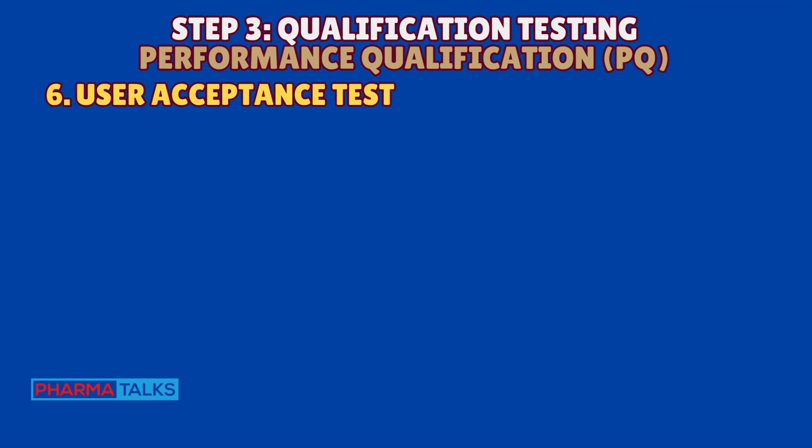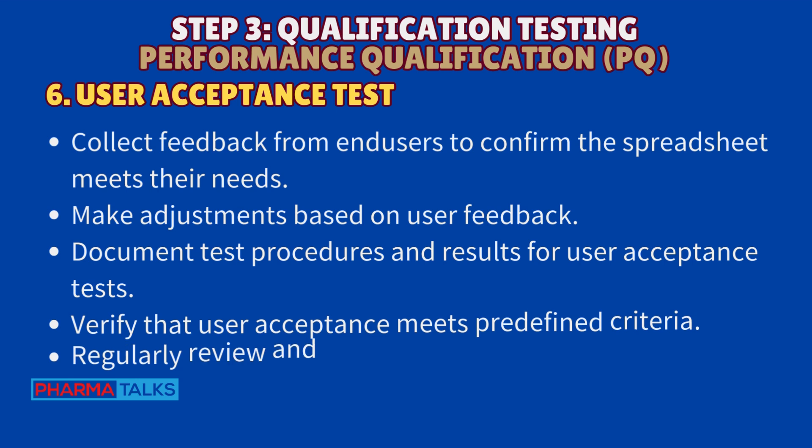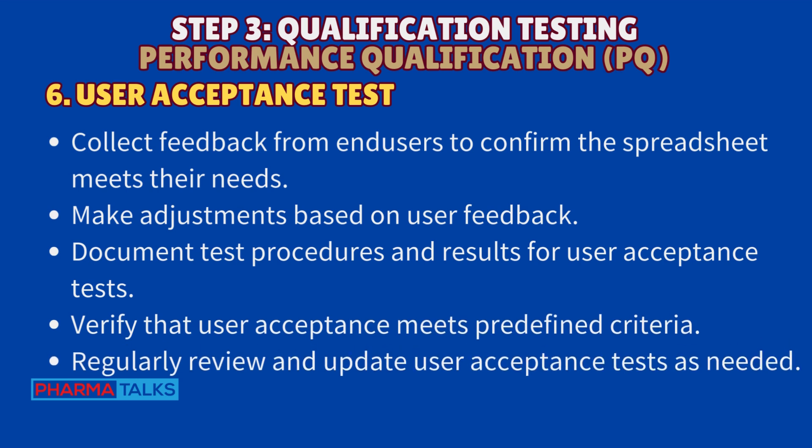User acceptance test. Collect feedback from end-users to confirm the spreadsheet meets their needs. Make adjustments based on user feedback. Document test procedures and results for user acceptance tests. Verify that user acceptance meets predefined criteria. Regularly review and update user acceptance tests as needed.